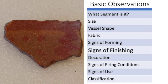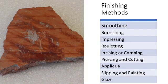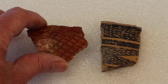Finishing methods alter the appearance of the vessel without substantially altering its shape. Smoothing can result in a kind of wiped appearance of the surface, but burnishing results in a much more noticeable smoothing that gives the surface a very glossy appearance.